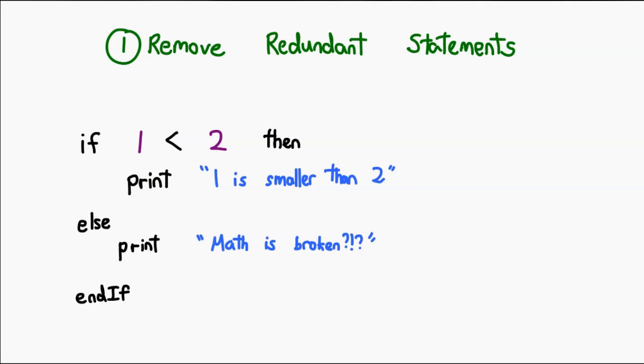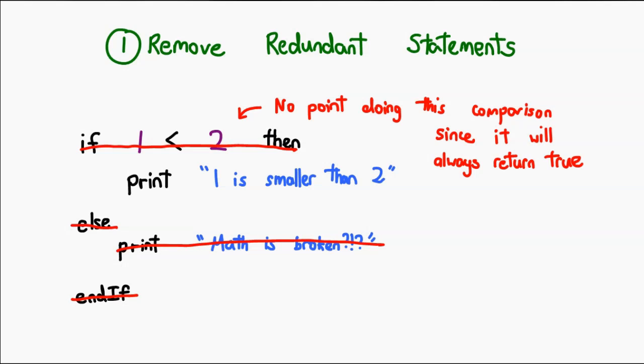Other examples of this include, say, if-else statements where the condition is always true or always false, meaning you don't have to check the condition at all because one half of that code is never going to run. Other examples will be functions that don't do anything. If that is the case, then don't run that function.